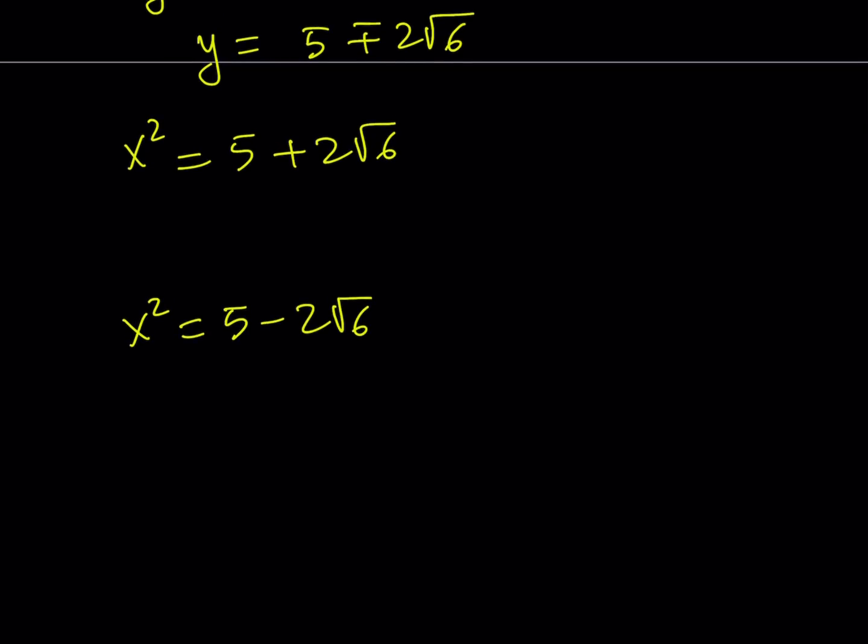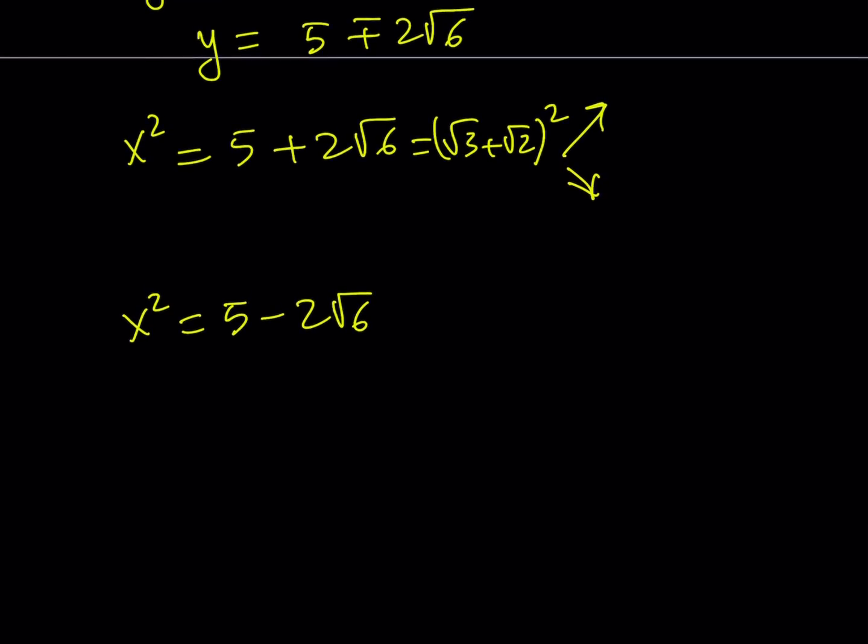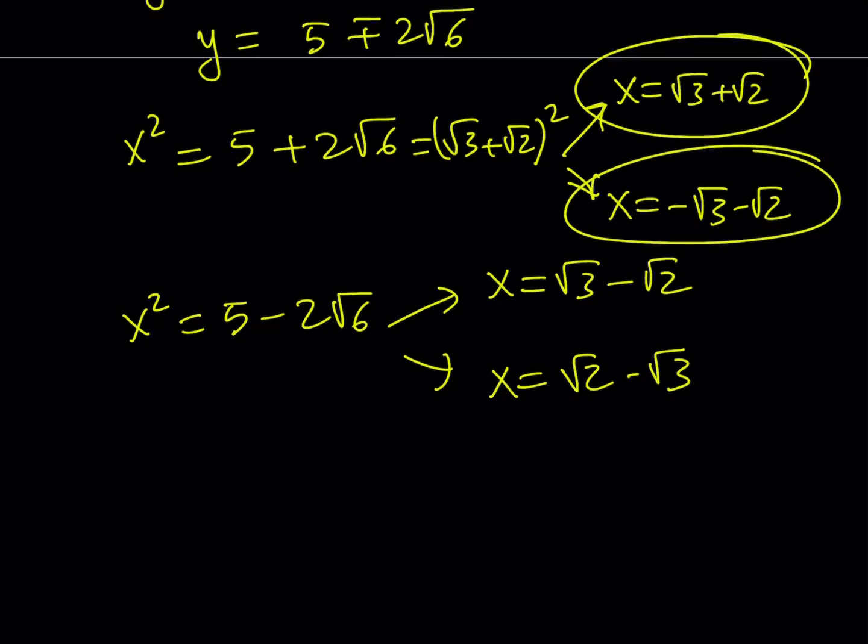But remember, there are two numbers whose square equals a positive real number. And so, one of them is going to be root 3 plus root 2, and the other one is going to be the opposite of that. And we can safely say the same thing. Something similar here. The roots are going to be root 3 minus root 2 and root 2 minus root 3. These are all the roots of this quartic equation. Notice that they are conjugates. They're kind of friends. Let's not discriminate.